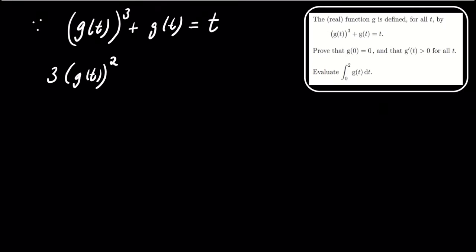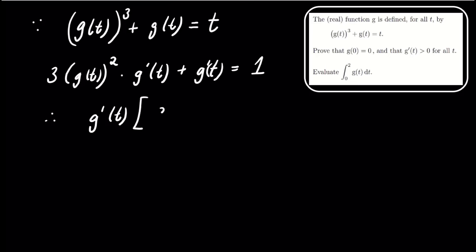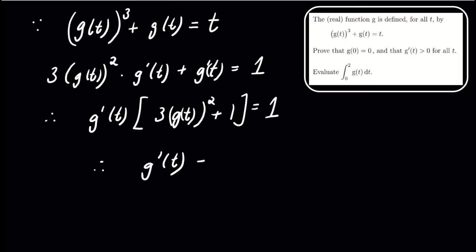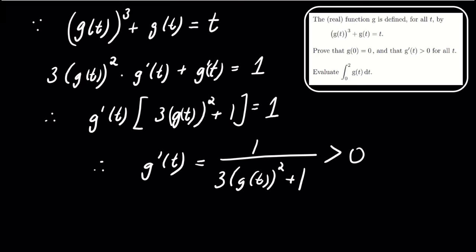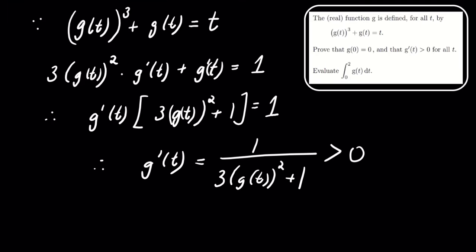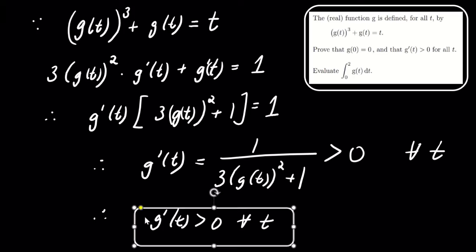Next, we will prove that the derivative of g with respect to t is greater than 0, taking the derivative of both sides of our original equation. We see that the derivative of g with respect to t equals 1 divided by the quantity 3 times g of t squared plus 1, which is greater than 0 for all t because 3 times g of t squared plus 1 is always positive. Therefore, we conclude that the derivative of g with respect to t is greater than 0 for all t.